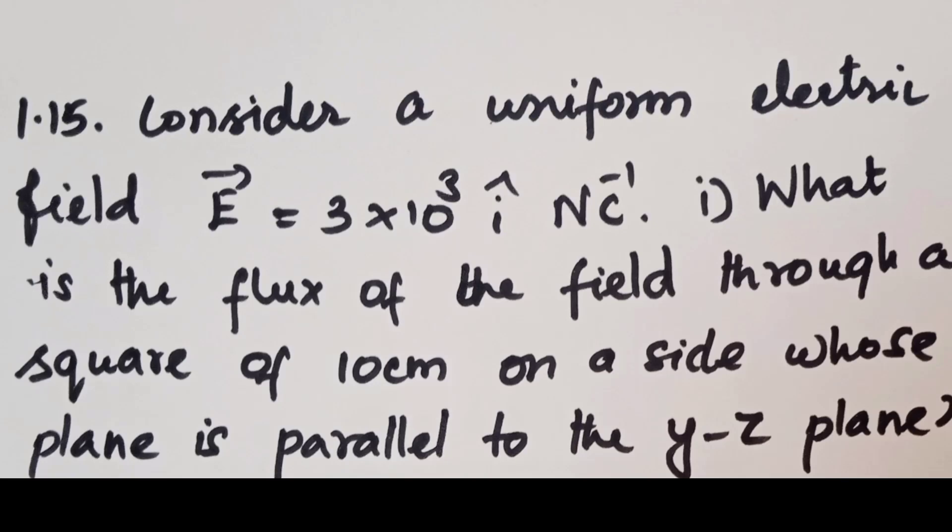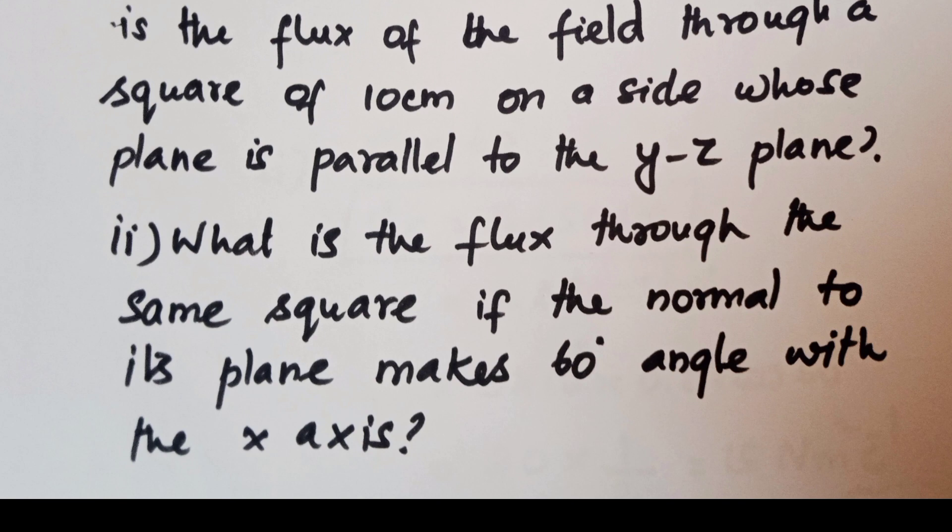Consider a uniform electric field E vector is equal to 3 into 10 power 3 i cap newton per coulomb. What is the flux of this field through a square of 10 centimeter on a side whose plane is parallel to the yz plane? What is the flux through the same square if the normal to its plane makes a 60 degree angle with the x-axis?